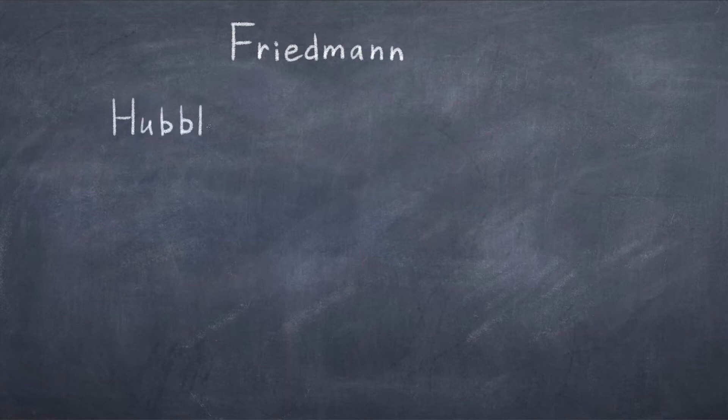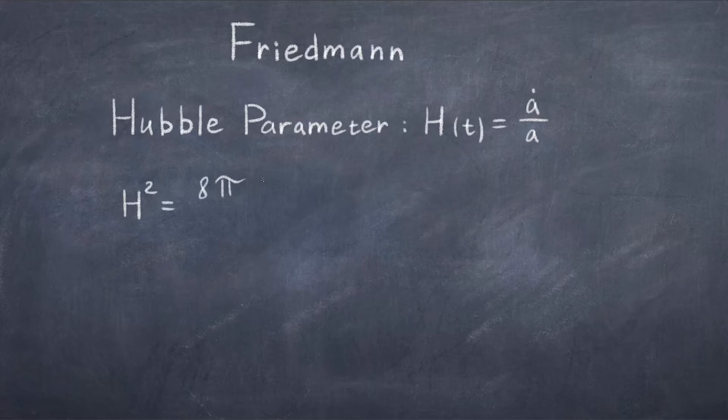A core component of the Lambda CDM model is the Friedman equations, which also imply that general relativity is assumed to be correct. Recall from the last video that the scale factor A is related to the Hubble parameter H in the following way, where H, which is a function of time, is equal to A dot divided by A. Then we can write the Friedman equations as H squared equals 8πG divided by 3 times ρ minus K over A squared plus Λ divided by 3.